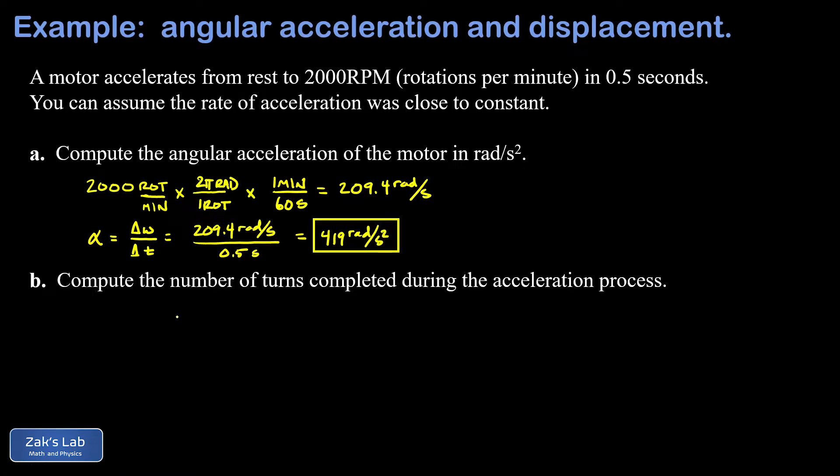Now in part b we're asked for the number of turns completed during the acceleration process. Our first constant acceleration angular kinematics equation will give us the angular displacement in radians and then we'll have to convert into complete turns.